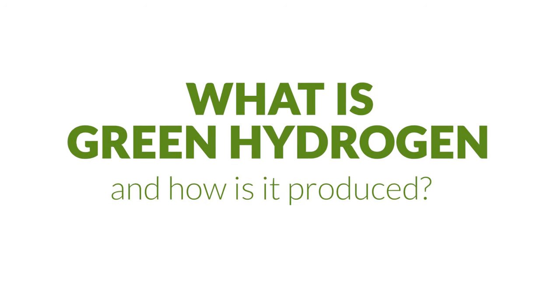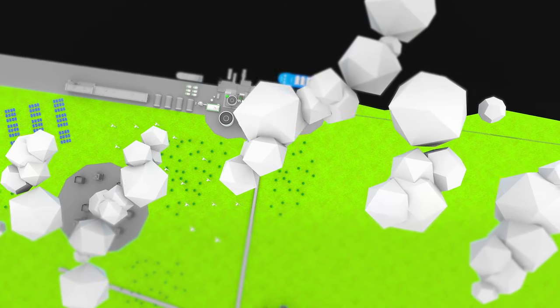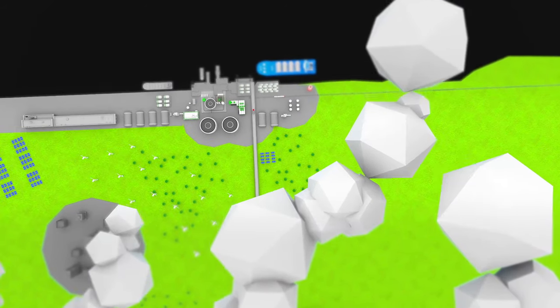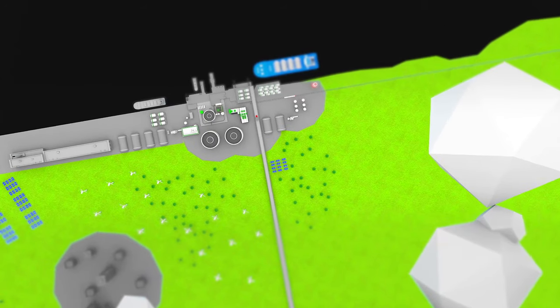What is green hydrogen and how is it produced? In order to combat climate change, we need to adopt electrification as a clean and sustainable solution to many of our transport and industrial needs.